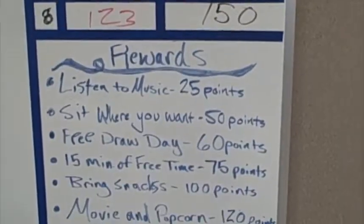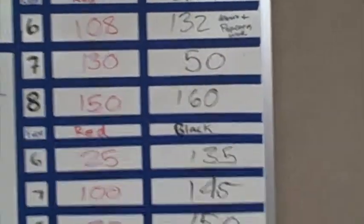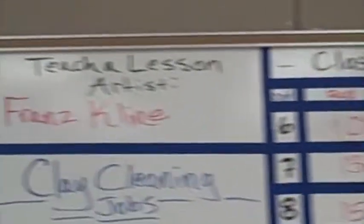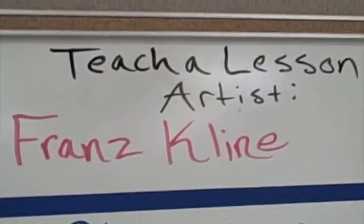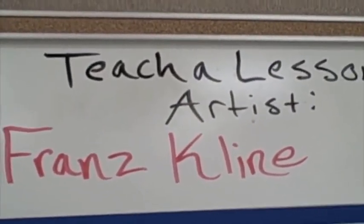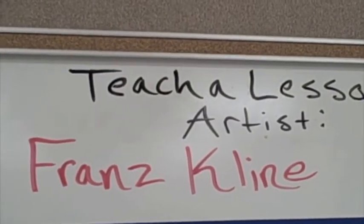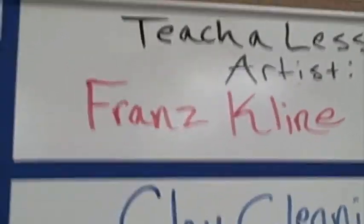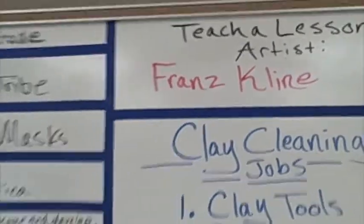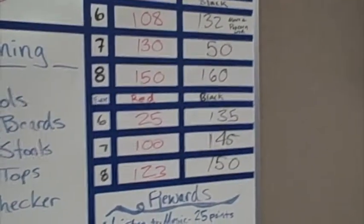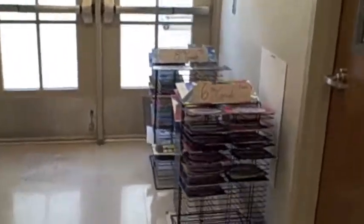Over here I have the class points system, where students can earn points for certain rewards — they can be added or taken away. At the top is the 'teach-a-lesson artist' section: I put up a different artist and it's the students' job to teach the class about that artist. They research, make a presentation, and can earn extra points for their class in the class points section.